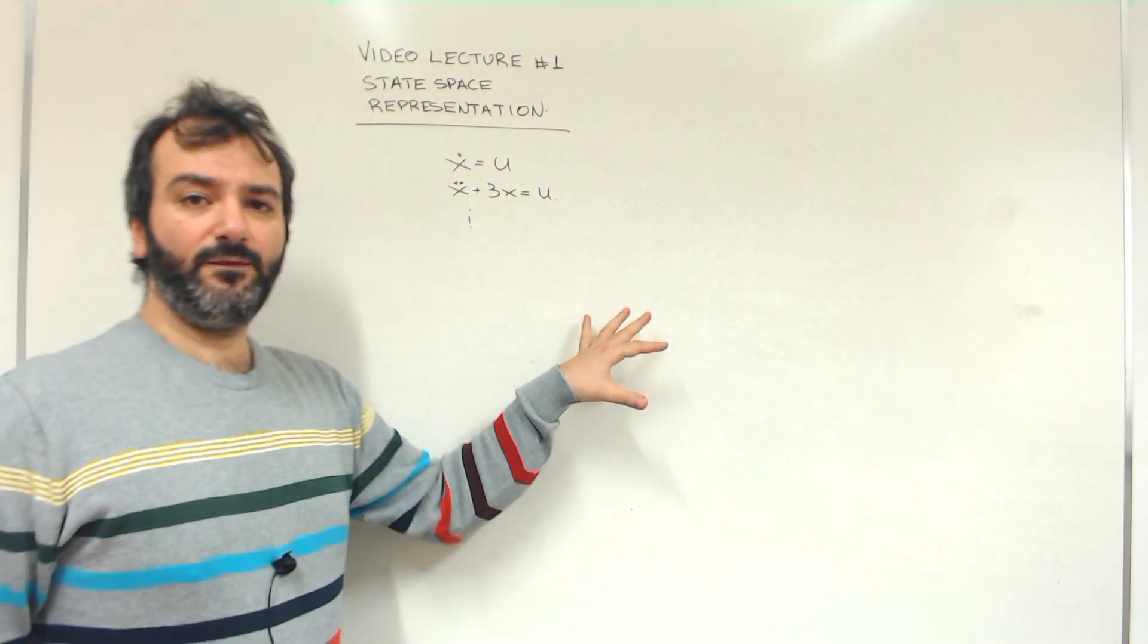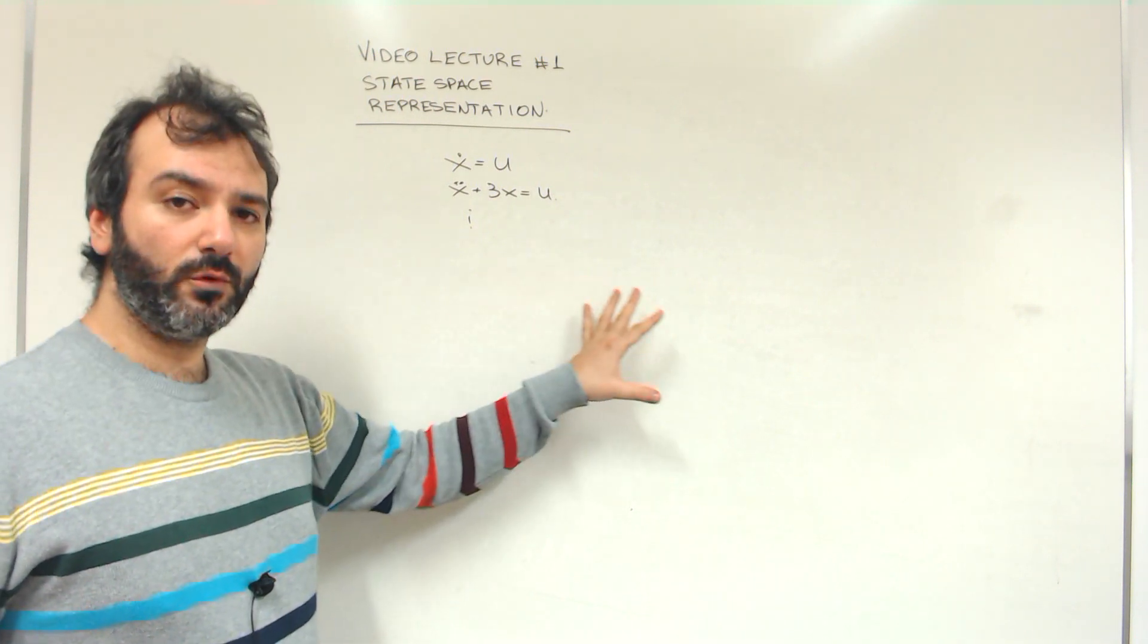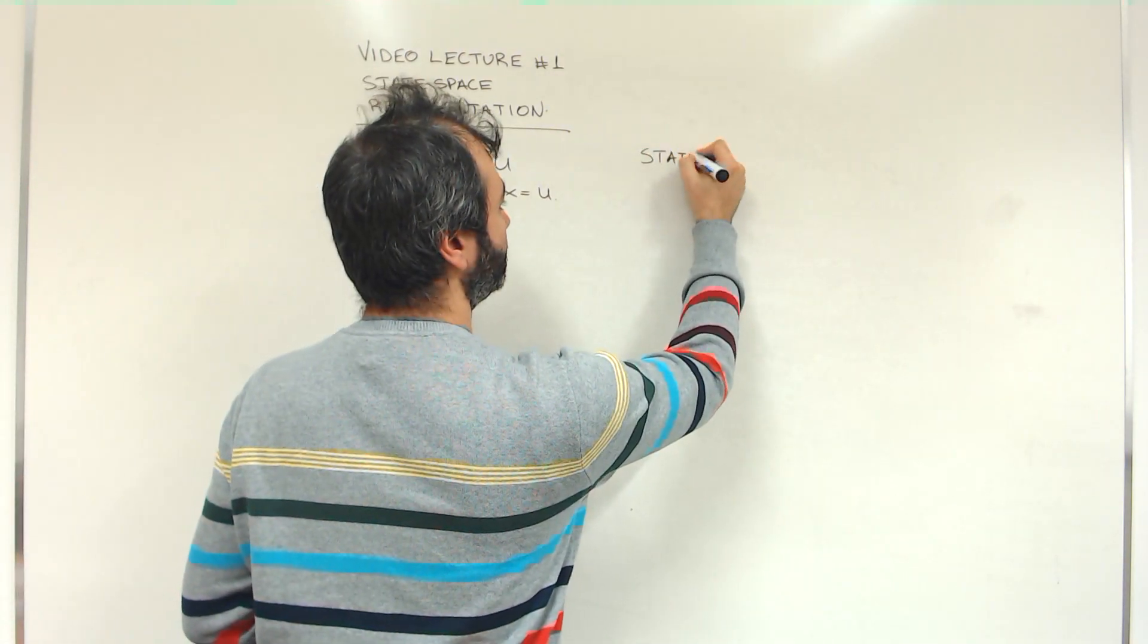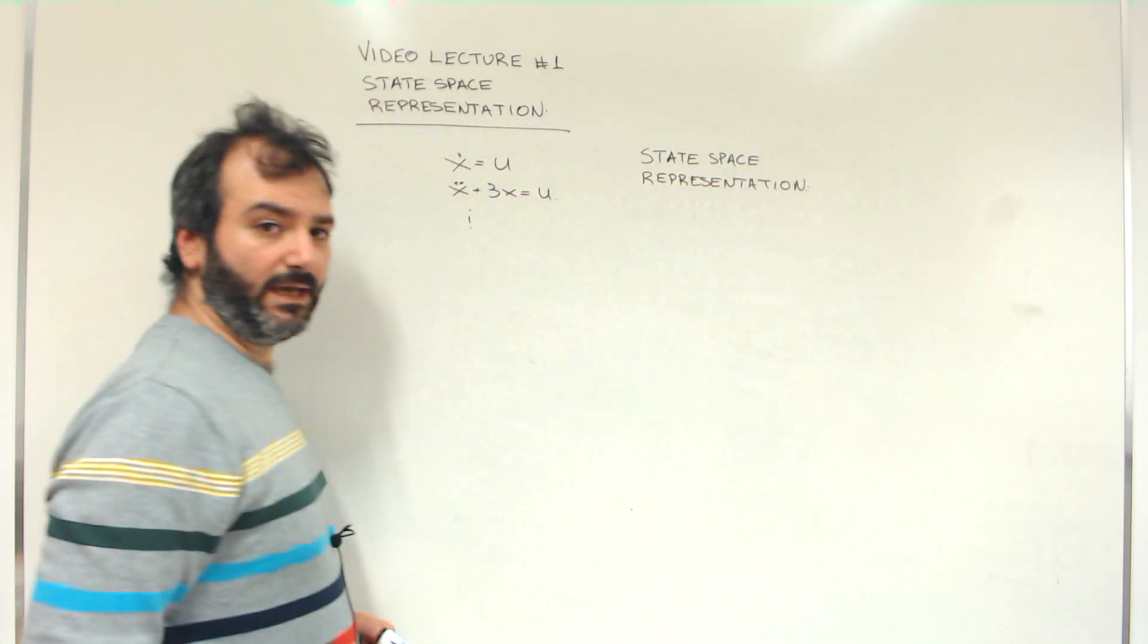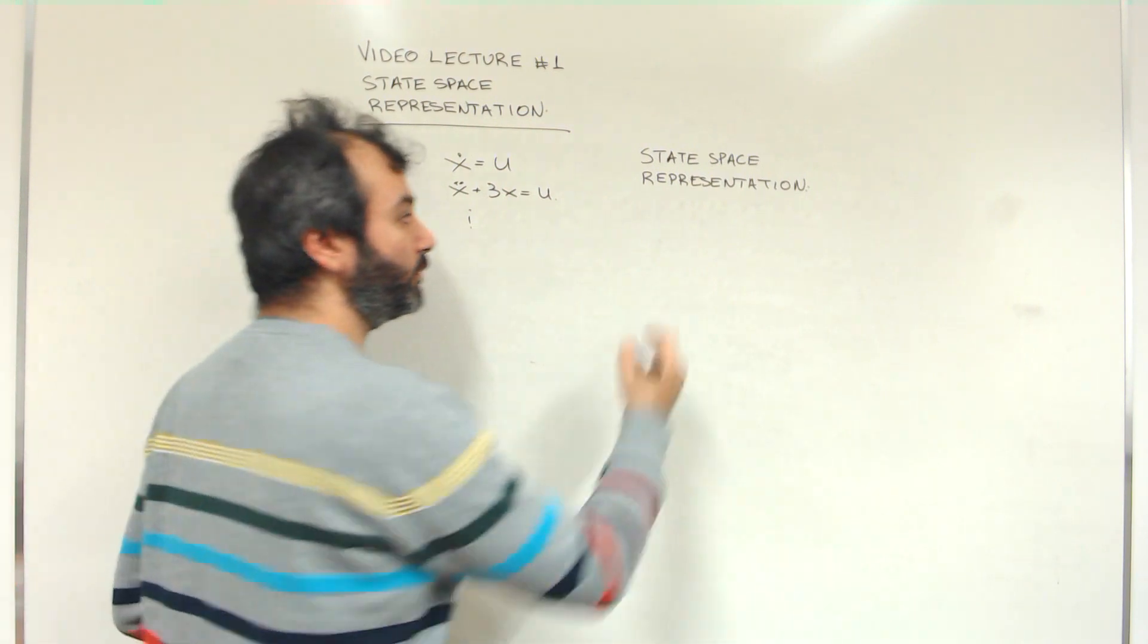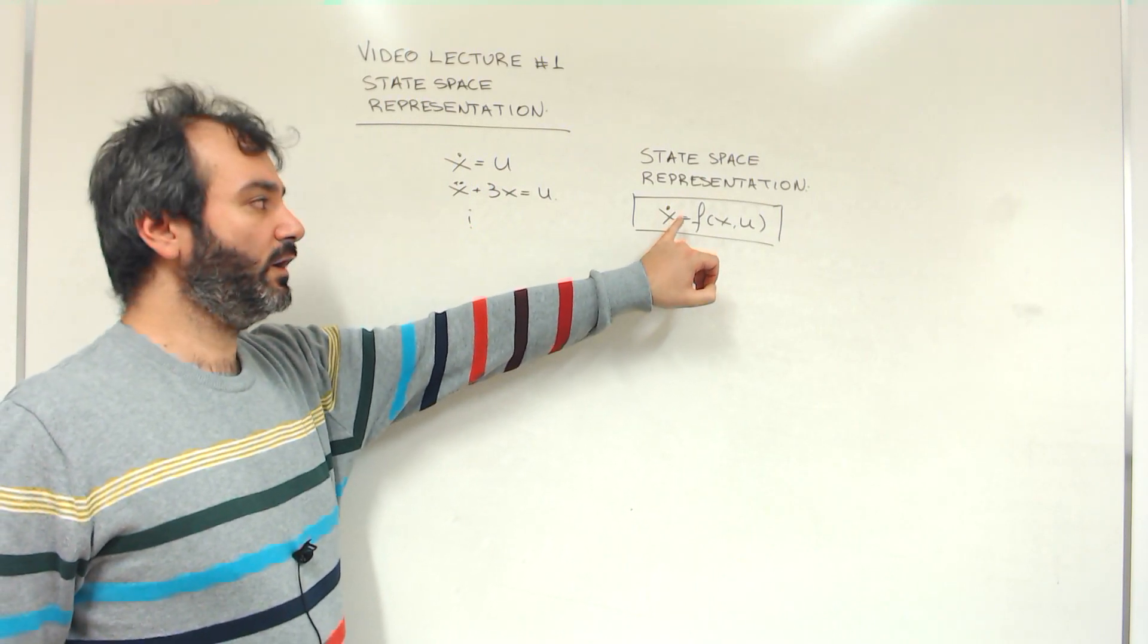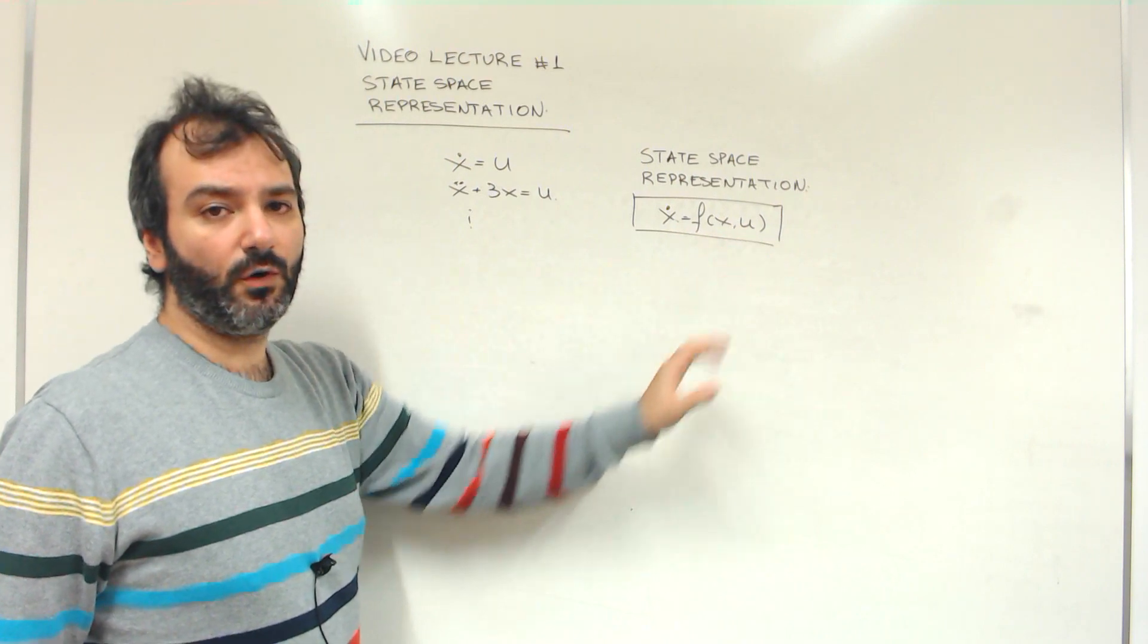We have a favorite form for such differential equations. More often than not, we are able to write such equations in the form of a state-space representation. The state-space representation of a differential equation has the following form. You see here, we only have a first derivative on the left-hand side of the equation, and a function of the state and the input on the right-hand side.